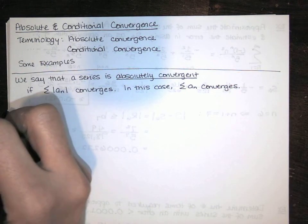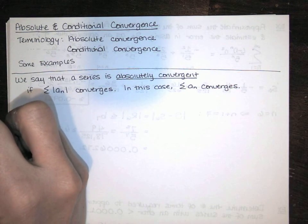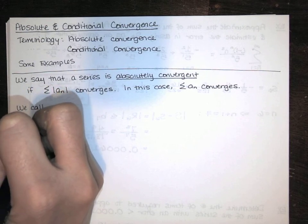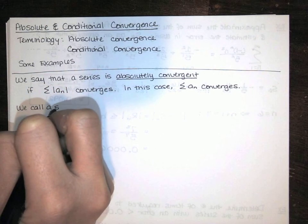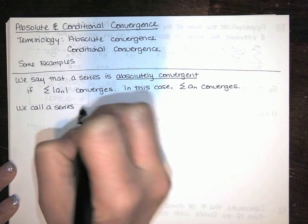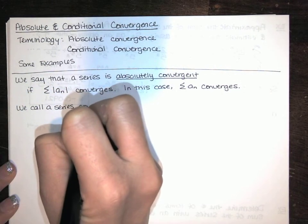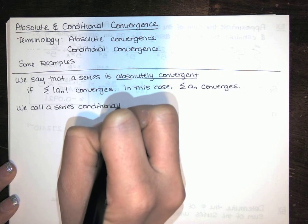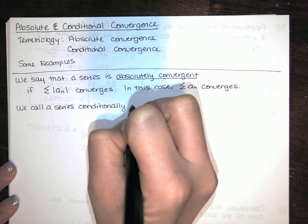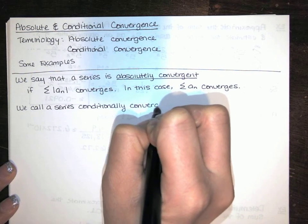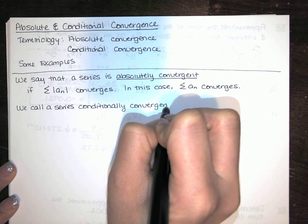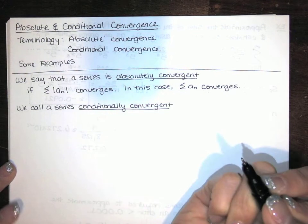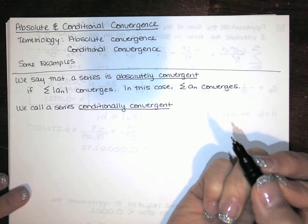Now we call a series conditionally convergent when the series itself converges but the series of absolute values doesn't.